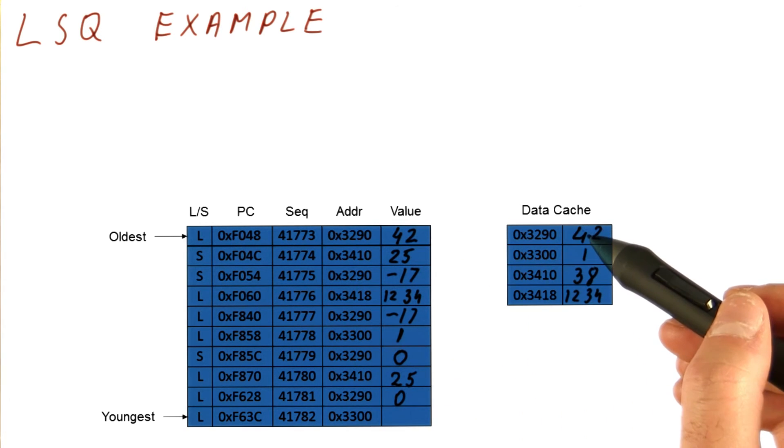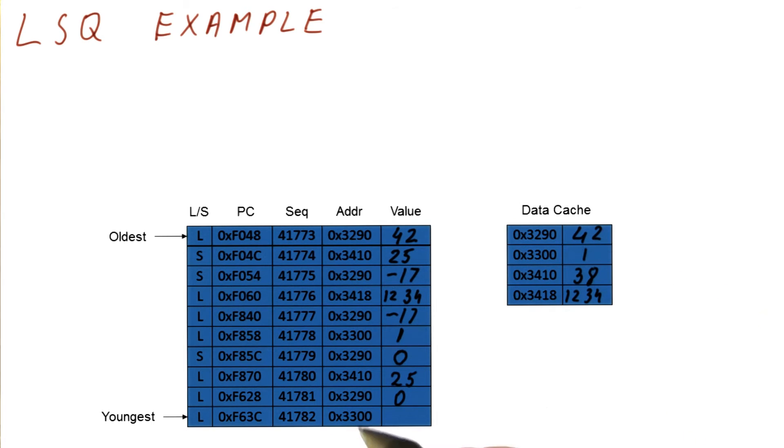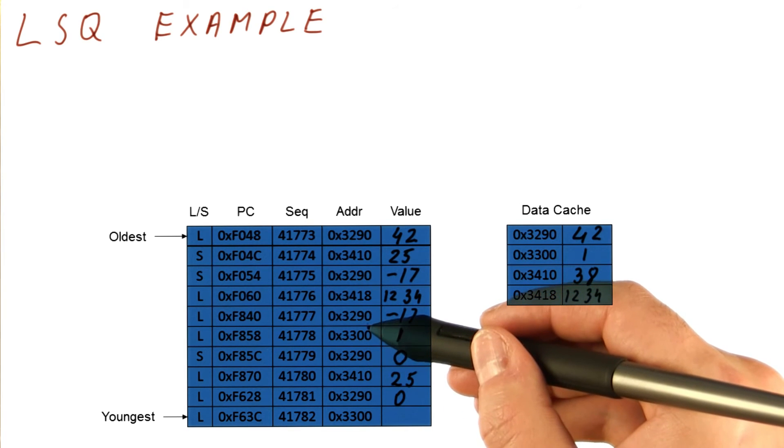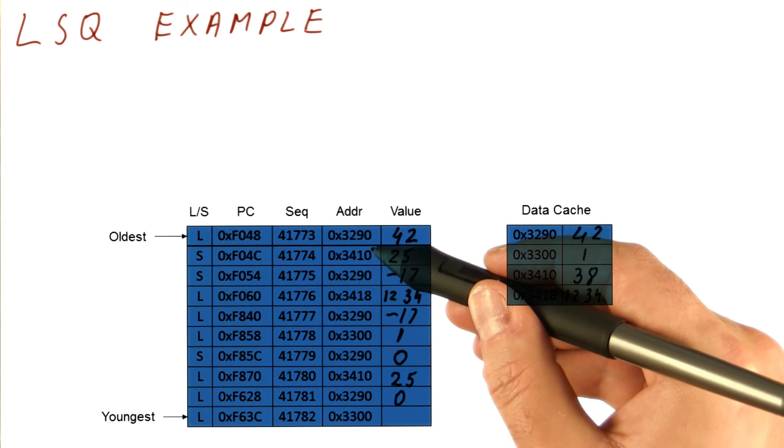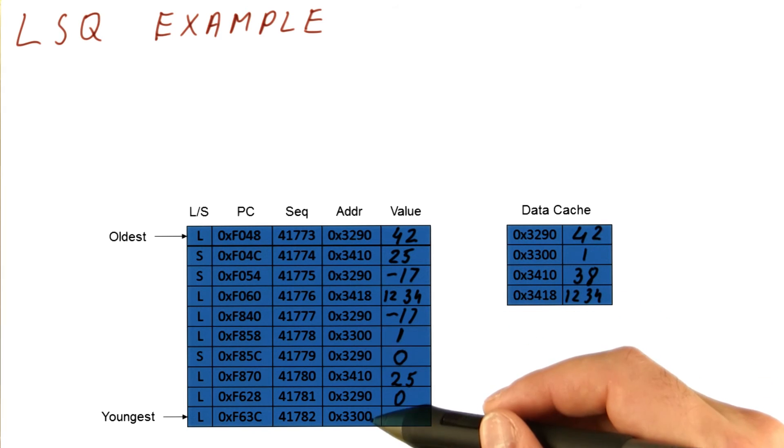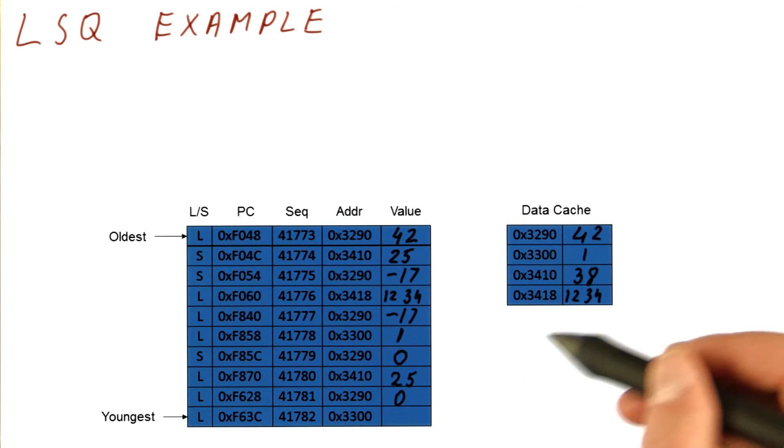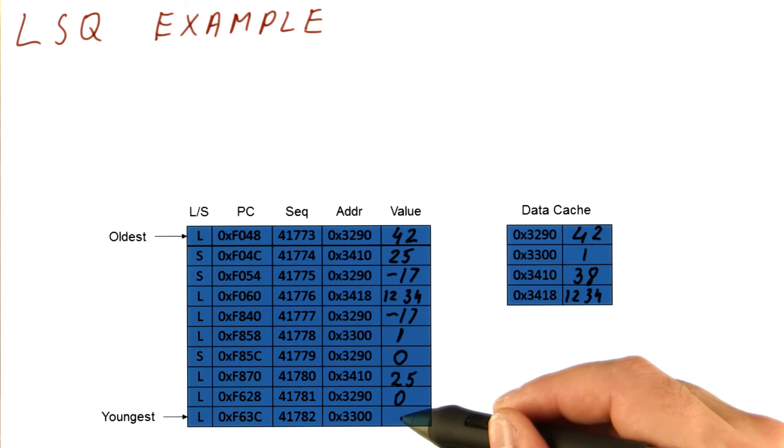And finally, we have another load to 3300. It searches backward to find any stores to the same address. Note that this is a load. We don't do that. So there are no stores to the same address, so we actually load the value from the cache, and the value is 1.